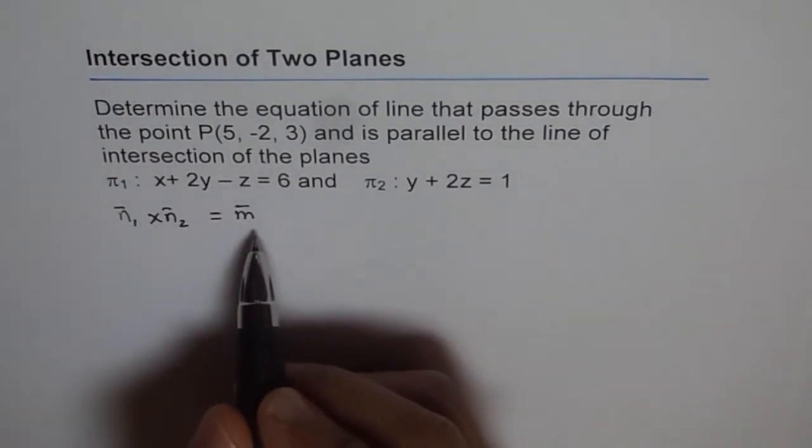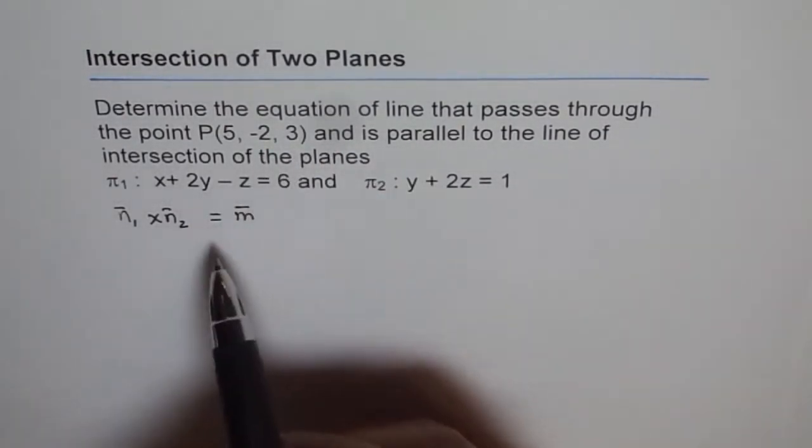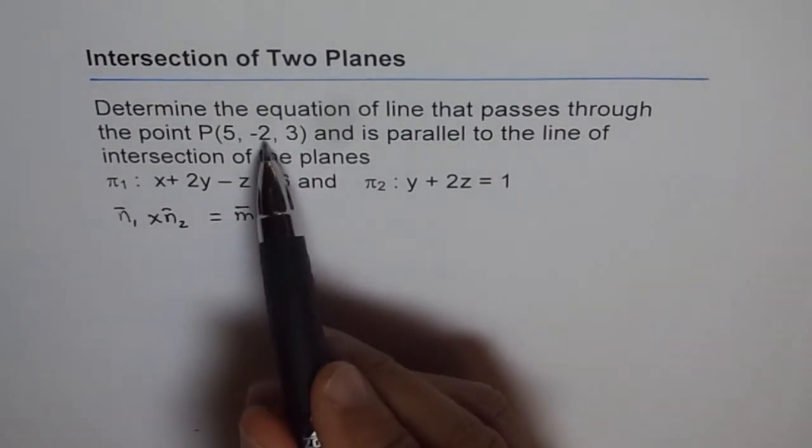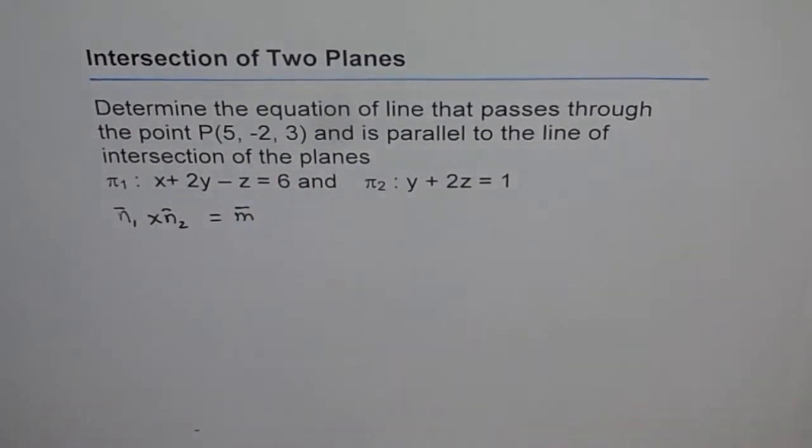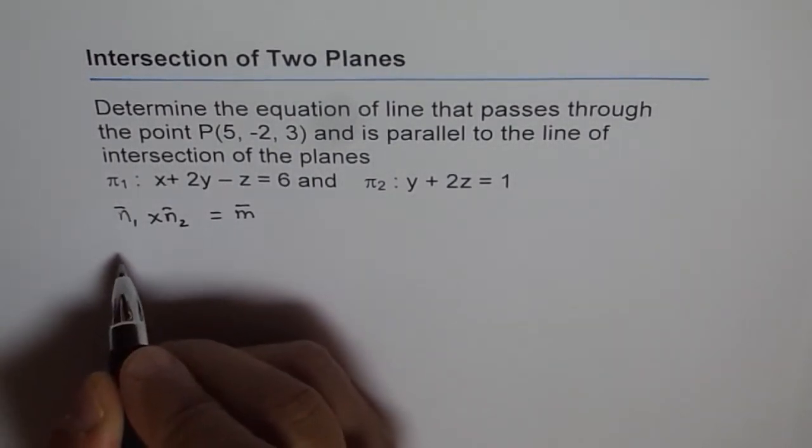So once we have direction of this line, then our line is parallel to this line. It will have the same direction and we will use this point and this direction vector to write down our equation. So let's do n1 cross n2.